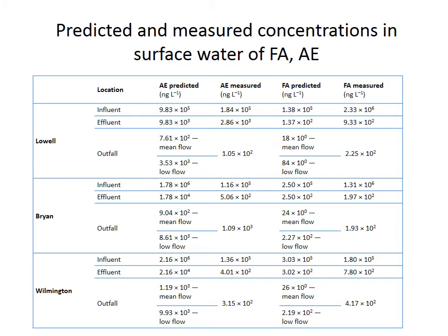Using the I-Stream model, we predicted the concentration of AE and FA in the influent, effluent, and outfall. The predicted environmental concentration of AE were found to be conservative for influent, effluent, and outfall compared to measured concentrations. Measured values for fatty alcohols did not correlate to the predicted values, which is to be expected because of the natural de novo synthesis and rapid degradation of fatty alcohols.